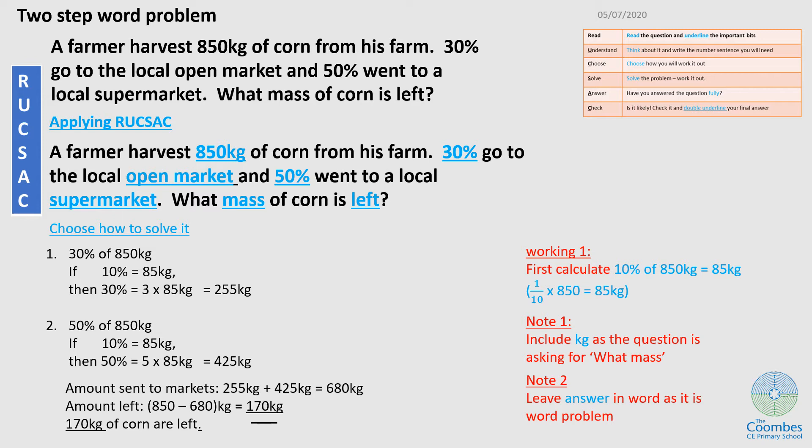I'm going to apply RUCKSACK to this question. First is to read and underline the important bits. And from the question, 850 kg of corn, then we know 30% was to the open market, and also 50% to the supermarket. Then it says, what mass is left? So now I have to think about it and write some number sentences.